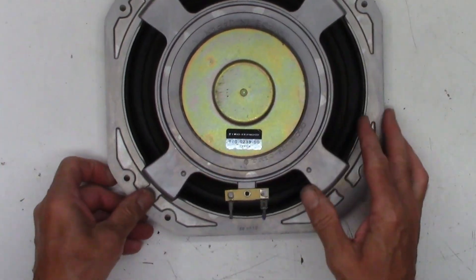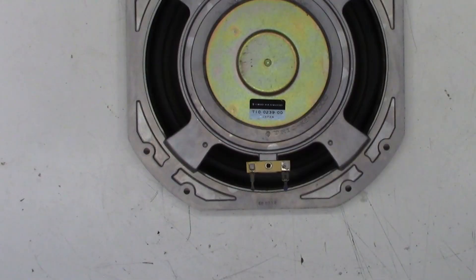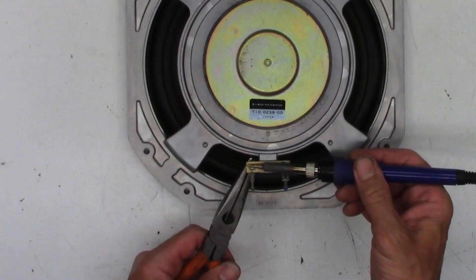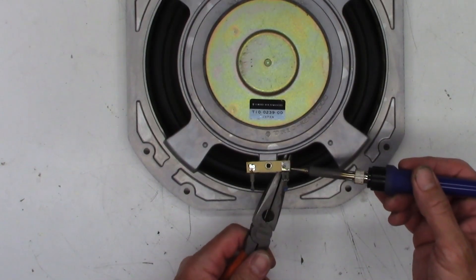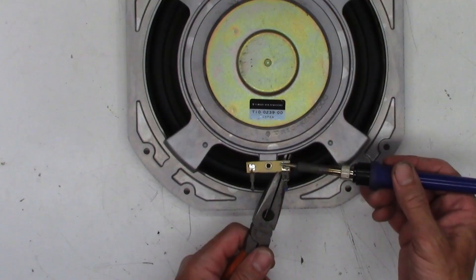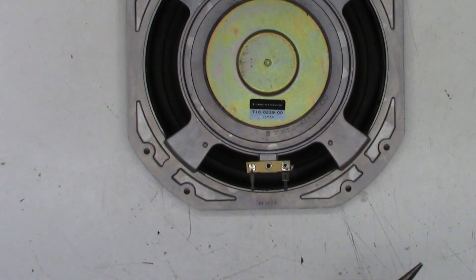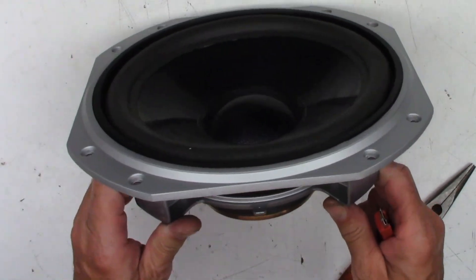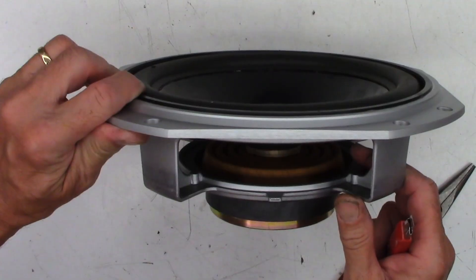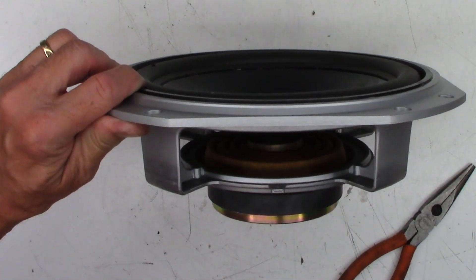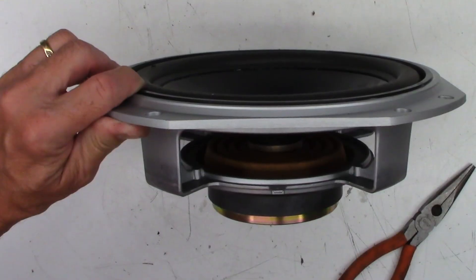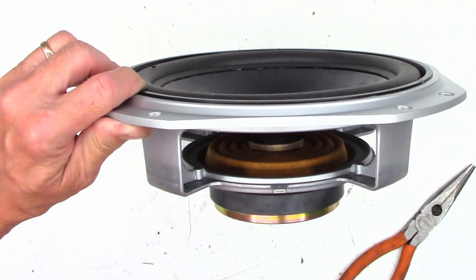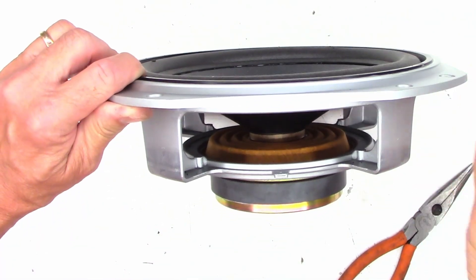Well, first thing, we'll unsolder the leads, just like on the last one. All right, both leads have been unsoldered. Now we'll try to do the destructive part. Let me go ahead and pump up the exposure for you guys. I know it's very dark down inside there. Okay, that should be good.